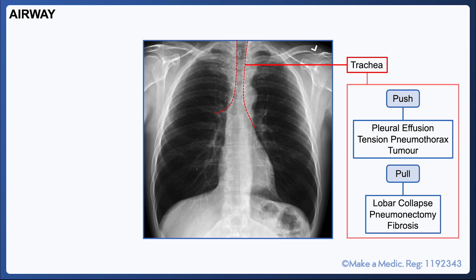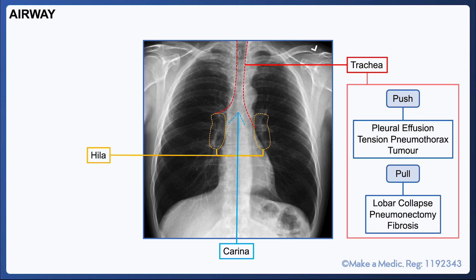You should also note the location of the carina. This is particularly important in patients who have had an NG tube inserted, as the tube should bisect the carina and the diaphragm. Finally, the hila are the roots of the lungs that consist of pulmonary vessels and the bronchi. They may look particularly prominent in patients with hilar lymphadenopathy.